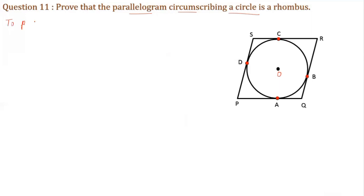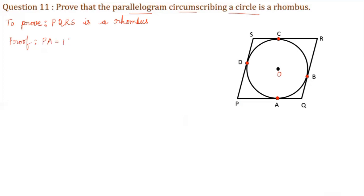Now we have to prove that PQRS is a rhombus. We know that opposite sides of a parallelogram are equal. If all sides of a parallelogram are equal, then it is a rhombus. So we have to prove PQRS is a rhombus. Now, if we prove two adjacent sides are equal, then all sides become equal. For this, let us use the property that tangents drawn from an external point are equal.